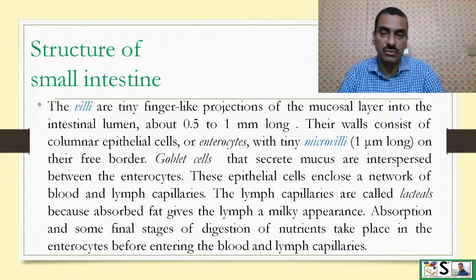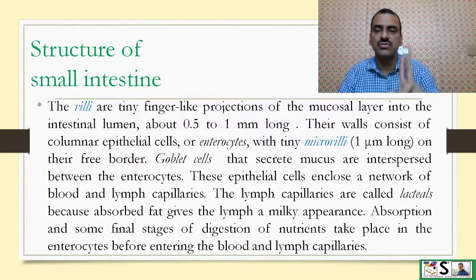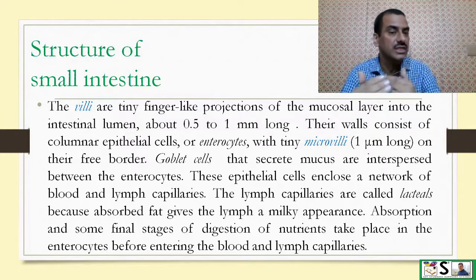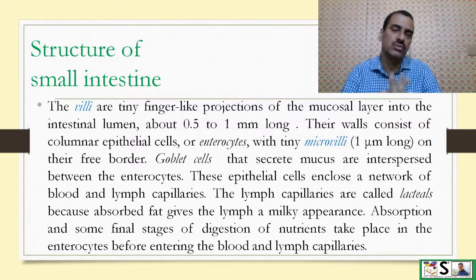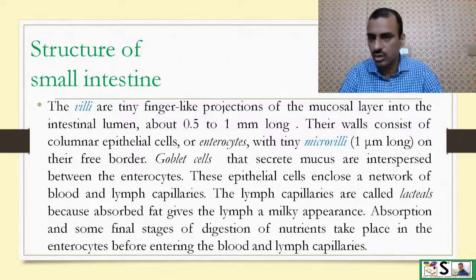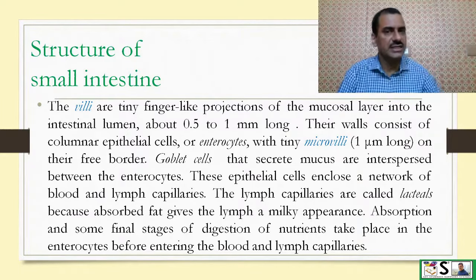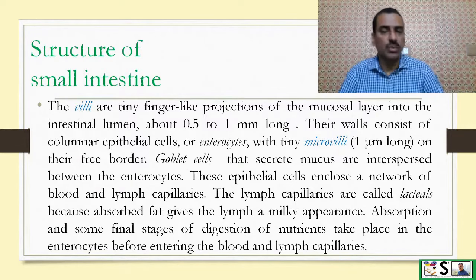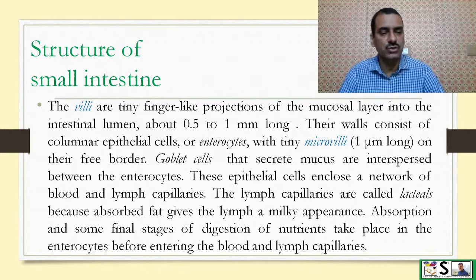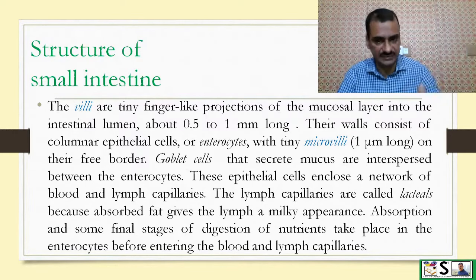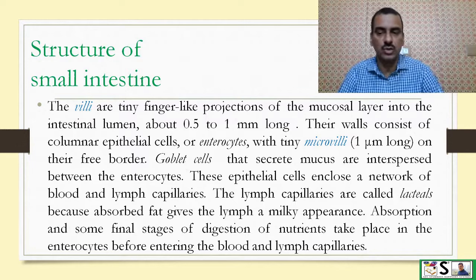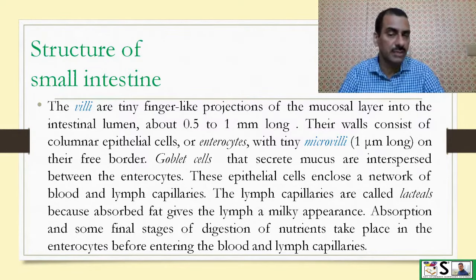The villi are finger-like projections in the mucosal layer into the intestinal lumen, about 0.5 to 1 mm long. Their walls consist of columnar epithelium known as enterocytes, which have microvilli on their upper end that are 1 micrometer long. Goblet cells that secrete mucus are interspersed between enterocytes. This epithelial layer encloses a network of blood and lymph capillaries. The lymph capillaries are called lacteals because absorbed fat gives the lymph a milky appearance. Absorption and final-stage digestion of nutrients takes place in the enterocytes before entering the blood and lymph vessels.